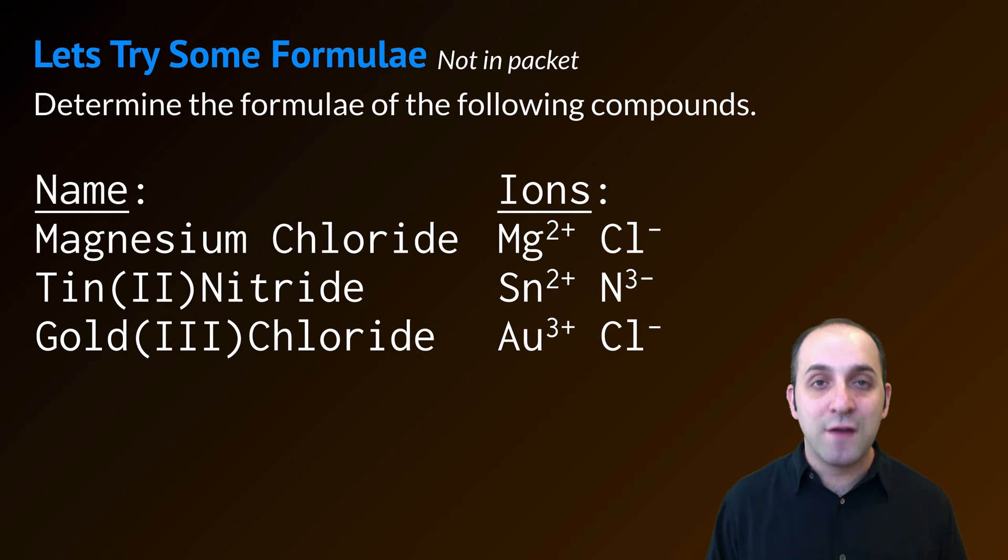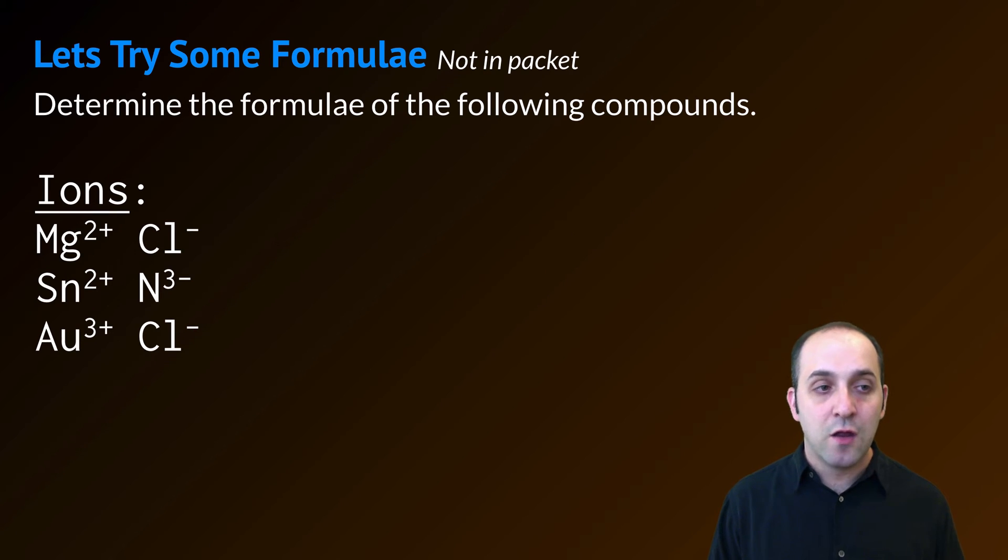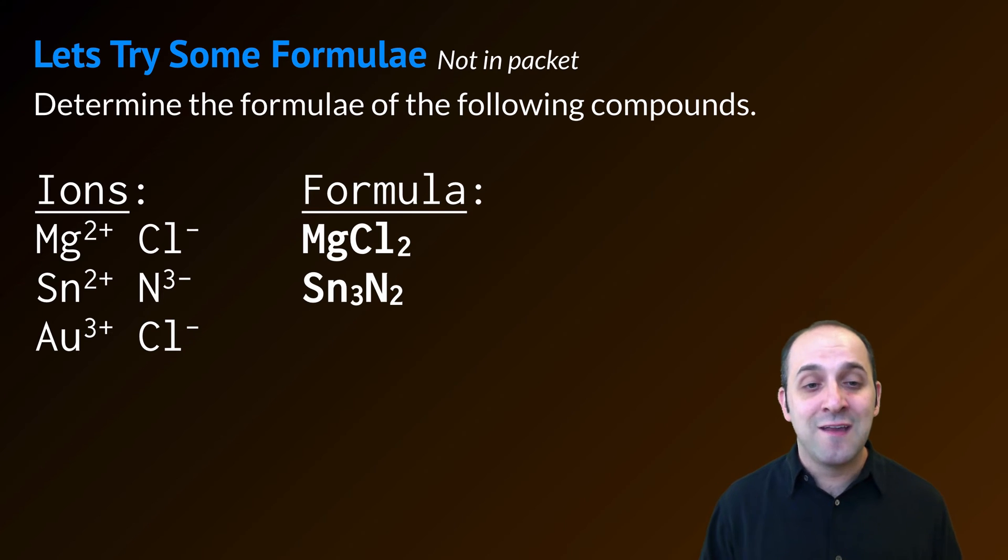Remember that it has to add up to zero. So the formula for magnesium chloride is going to use 1 magnesium and 2 chloride ions, MgCl2. The formula for tin 2 nitride is going to use 3 tins and 2 nitrogens to get to +6 from the tin and -6 from the nitrogen. And finally, the formula for gold 3 chloride is going to be AuCl3. Does this make sense?